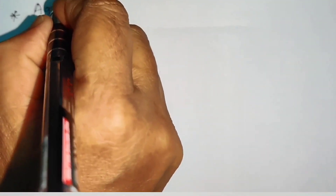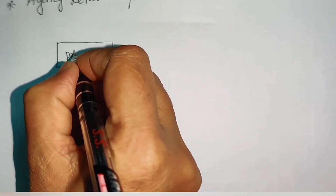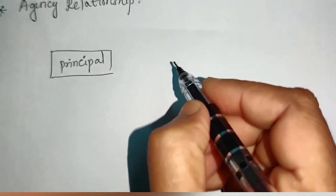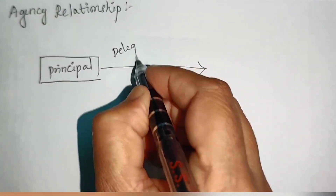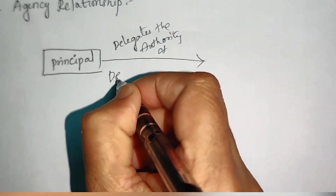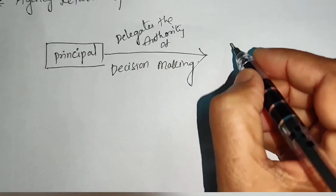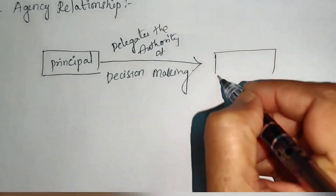The more interesting topic is agency relationship. What is agency relationship? It is the agreement between two parties. One party, by name principal, delegates the authority of decision-making to another party called agent.